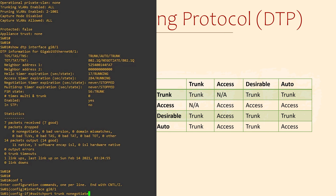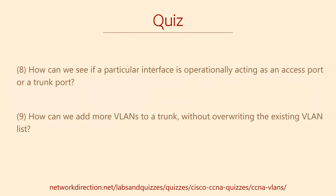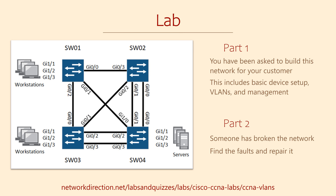It's really up to your preference though. There are two more quiz questions for you to think about — perhaps think about question 9 in particular, which involves adding more VLANs to a trunk link without breaking the ones already there. Most videos in this series also have a lab on NetworkDirection.net, built using Cisco CML, though you can use another product like GNS3, EveNG, or Packet Tracer.